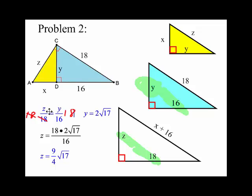Here we go, so you got Z is equal to 18 times the value of Y divided by 16 and that simplifies to 9 over 4 times the square root of 17.